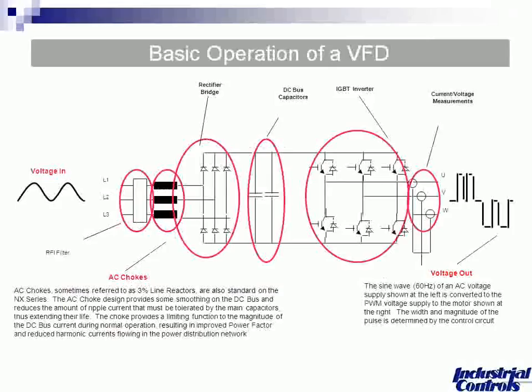The voltage goes into the rectifier, which immediately converts AC to DC. Then it goes into the DC bus — the big capacitors. Then into the inverter. The inverter has a series of switches moving very quickly, and that's how it creates the output sine wave. The faster those switches operate, the cleaner and less harmonics it develops on the line. It's beneficial to have a high-switching IGBT in that part of the drive, though if there's a nice big filter at the input, it's less critical.